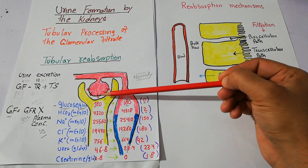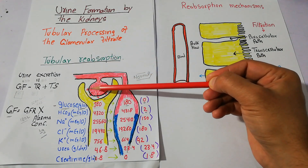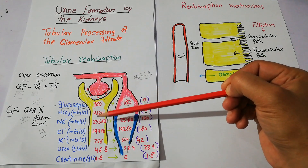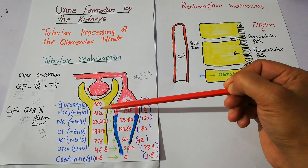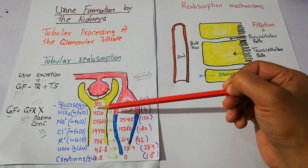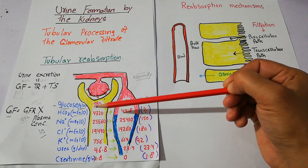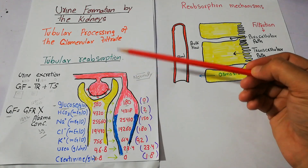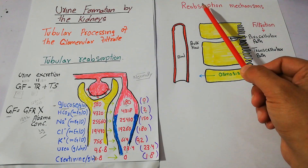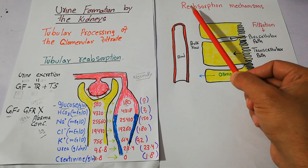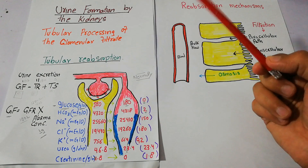The filtrate which has been filtered from the glomerular capillaries into the Bowman's capsule is moving along the nephron tubule. Some of the components of that filtrate — some solutes and some water — get reabsorbed from the proximal or distal tubules into the peritubular capillaries. In this lecture we will focus on the mechanisms which are used in the reabsorption process.